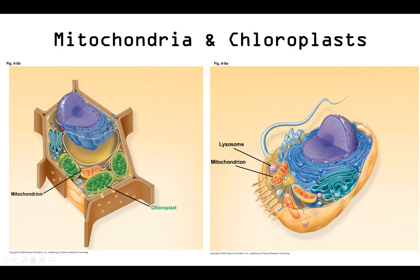Mitochondria — probably the powerhouse of the cell — is where we get our energy from cellular respiration, most of the energy. Our chloroplasts are plant cell organelles — our photosynthetic organelles. These are going to help us grab that energy from the sun and convert it ultimately into a form of chemical energy.